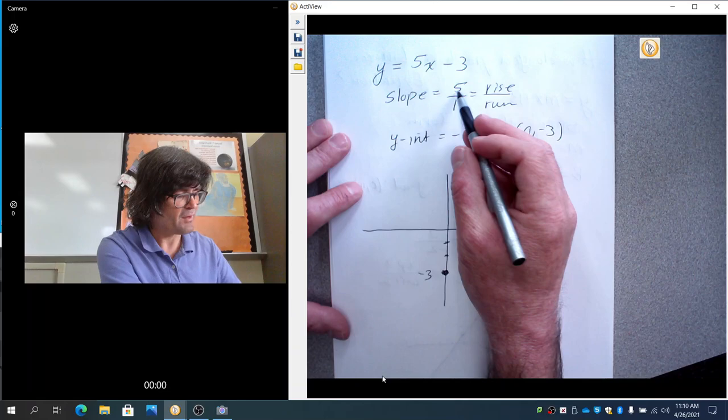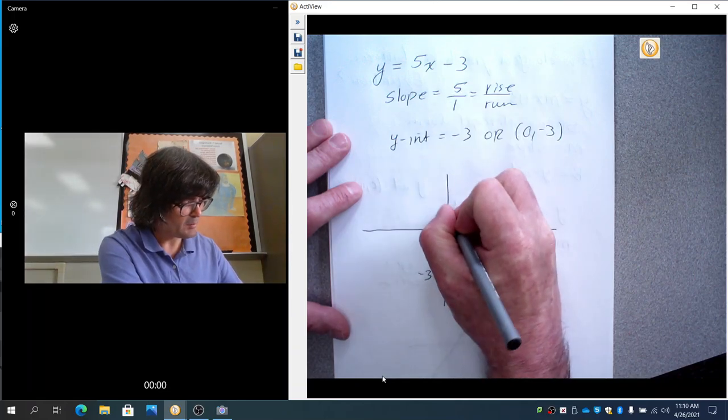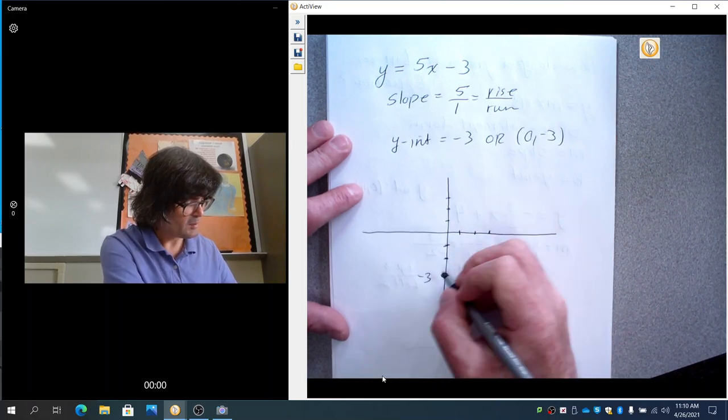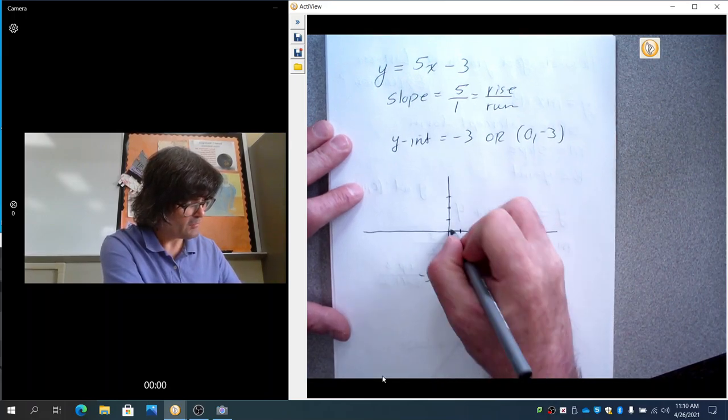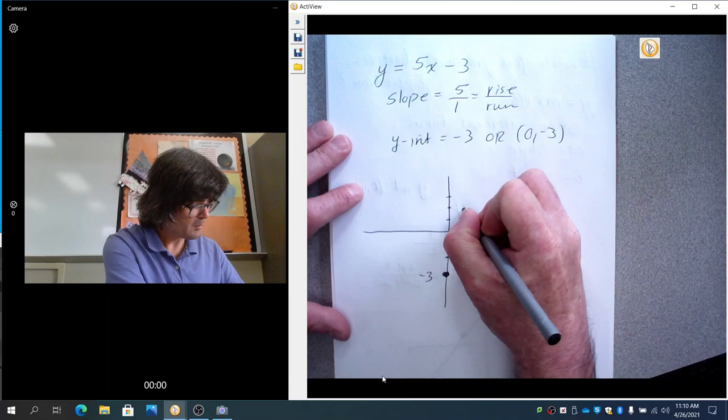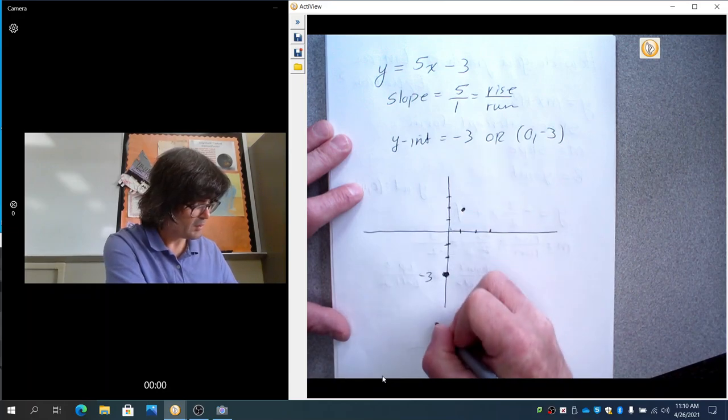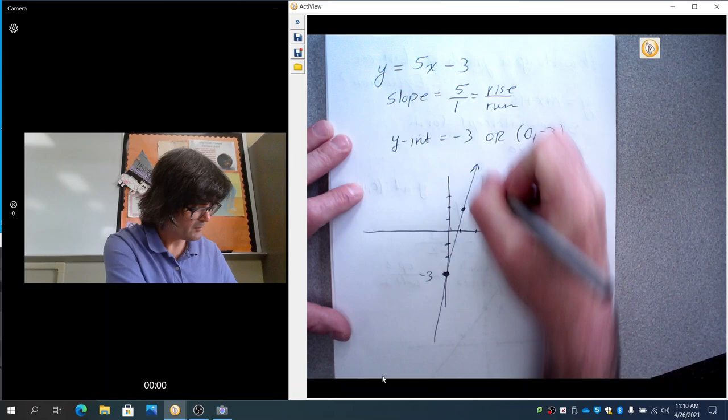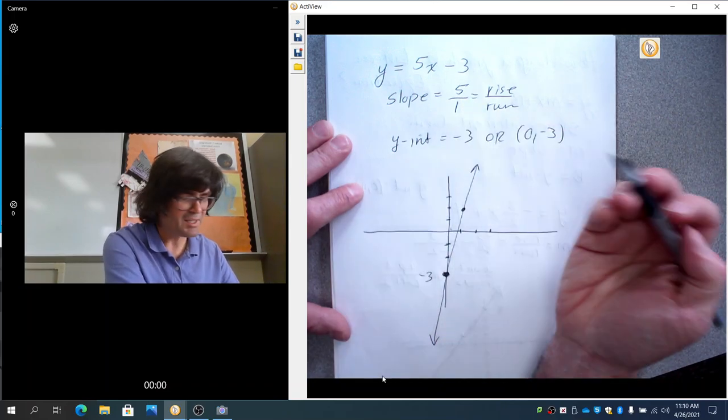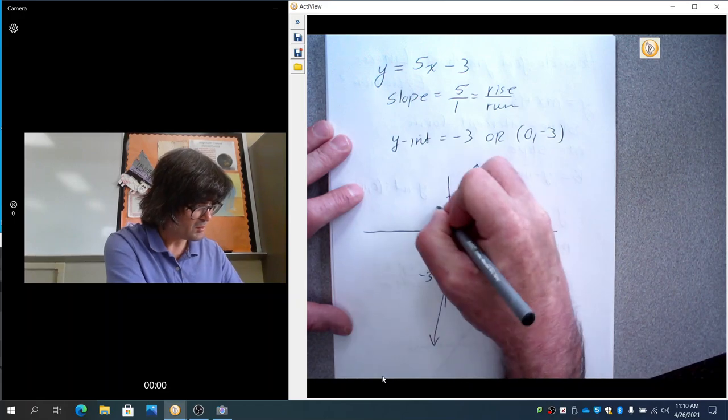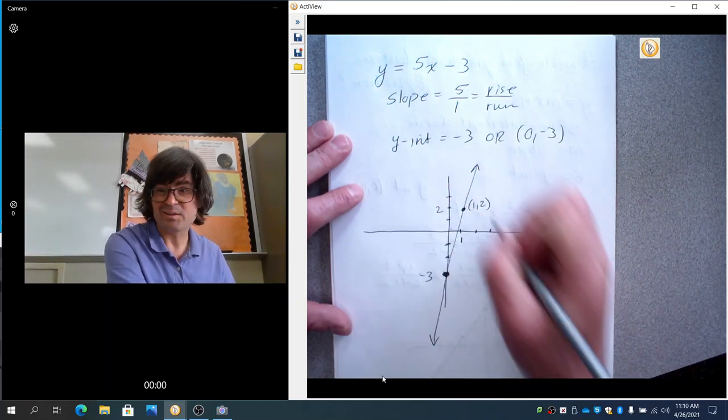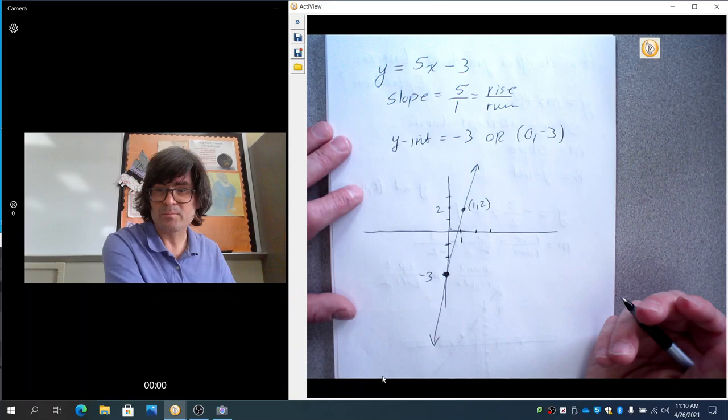My rise is 5 over 1. I need to add some more tick marks here. So, we'll go up 1, 2, 3, 4, 5 over 1. And then we're going to draw my line through both points, just like that. It's a slope of 5, so that's pretty steep. This is 1 and this is 2. This is the point 1, 2, if you needed to know that. So, that's slope-intercept form.